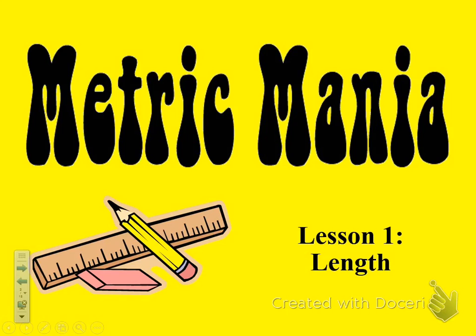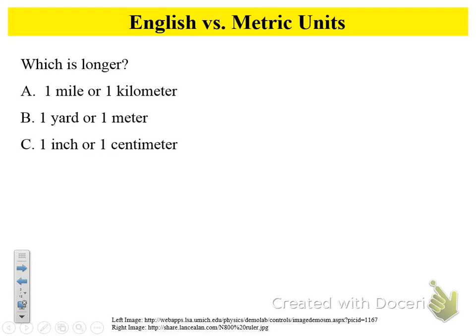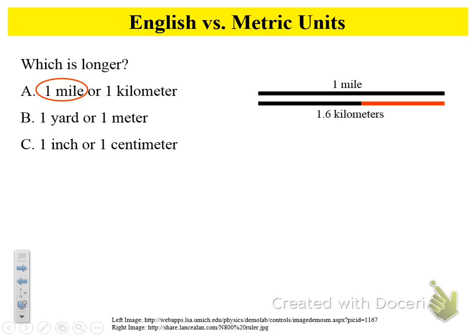Length — let's look at number one on your notes. The question is: which is longer, one mile or one kilometer? Thumbs up if you think one mile is larger, thumbs down if you think one kilometer is larger. One mile is actually bigger, so go ahead and circle one mile on number one. And if you look at number two, you see the statement: one mile equals 1.6 kilometers. You're going to fill in 1.6 kilometers for number two.